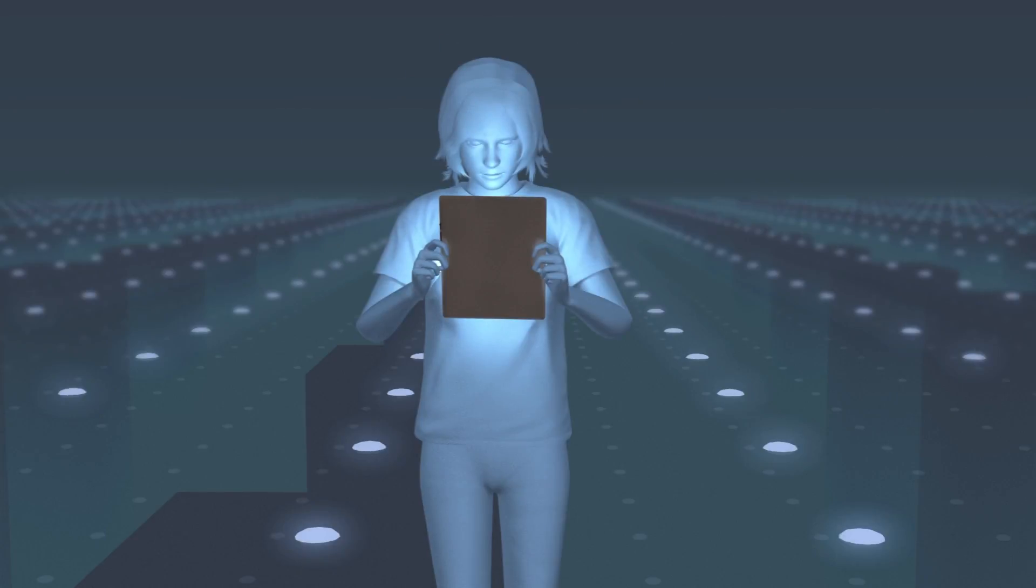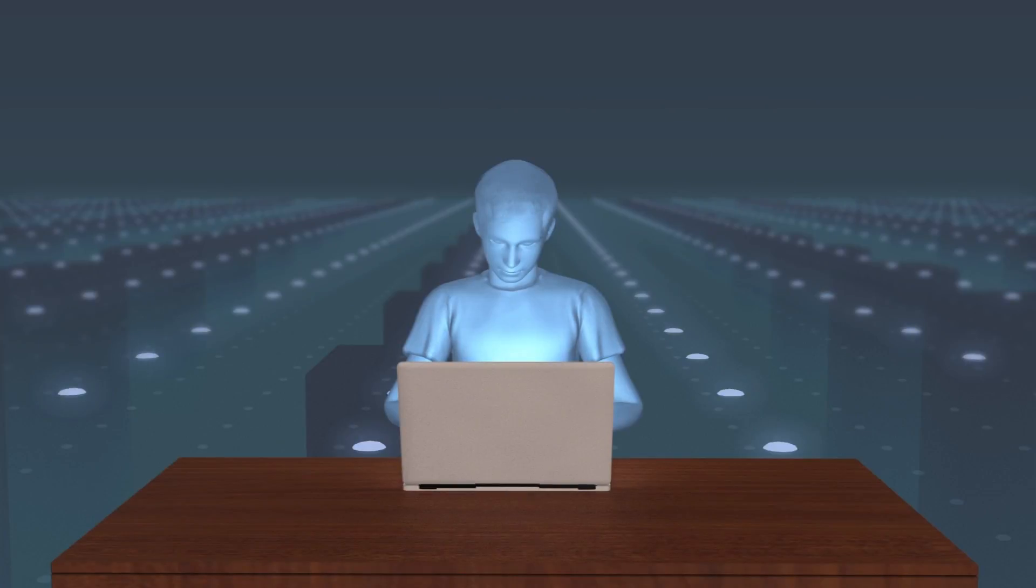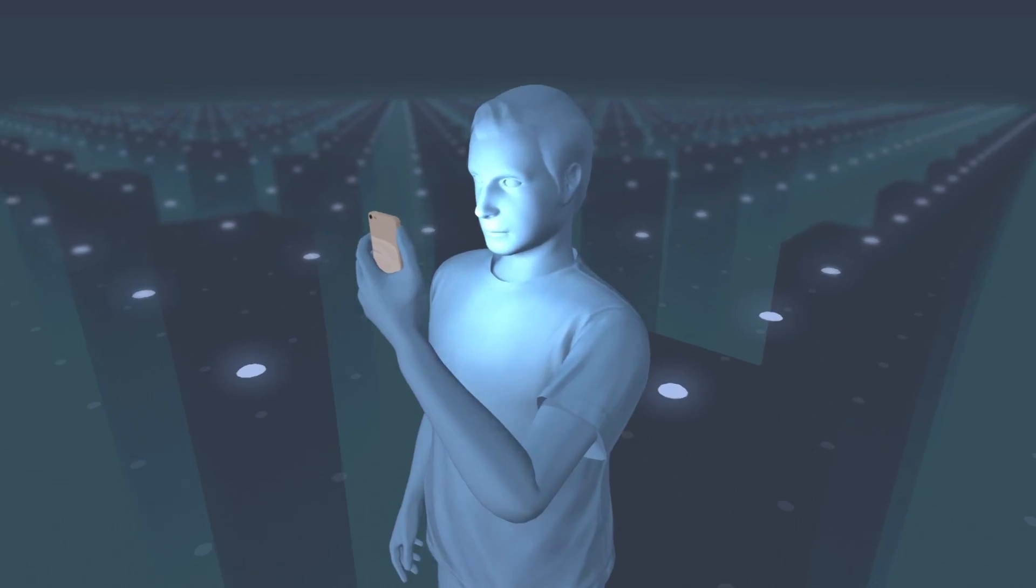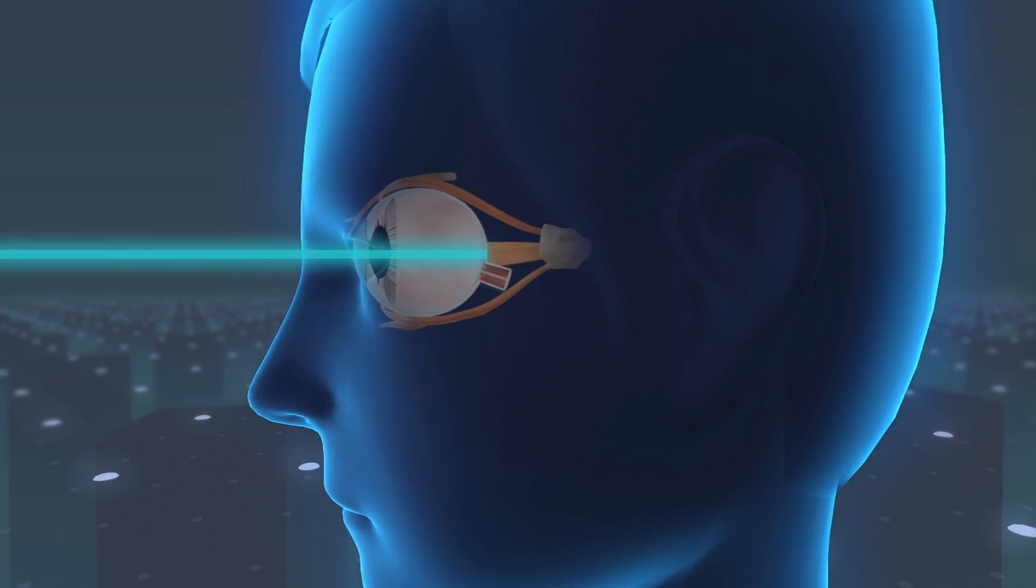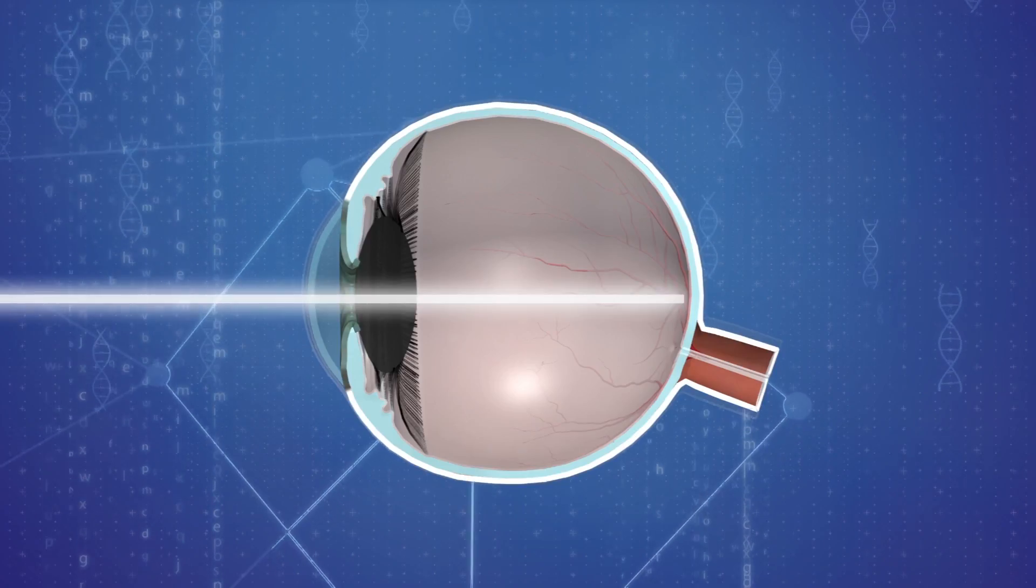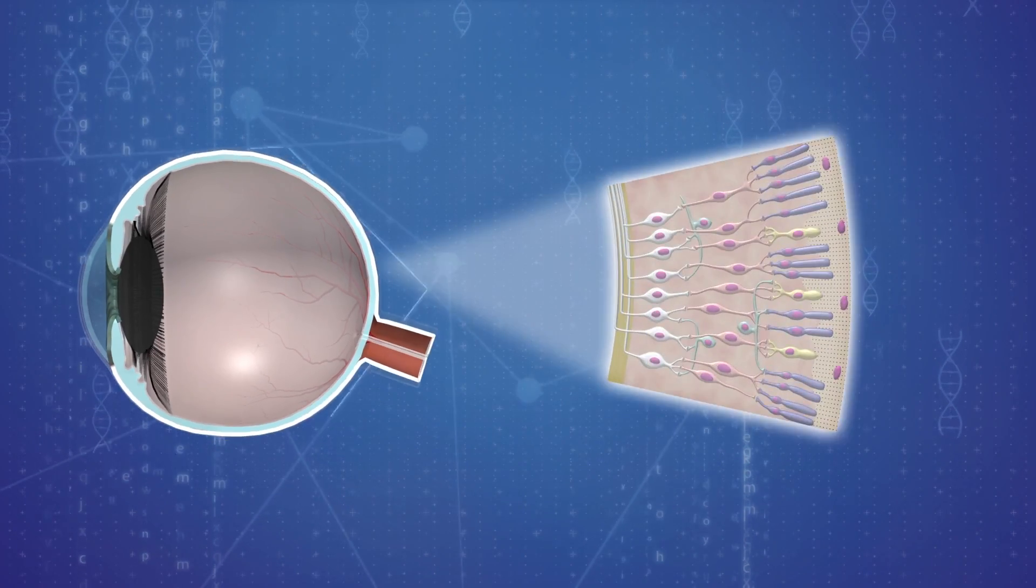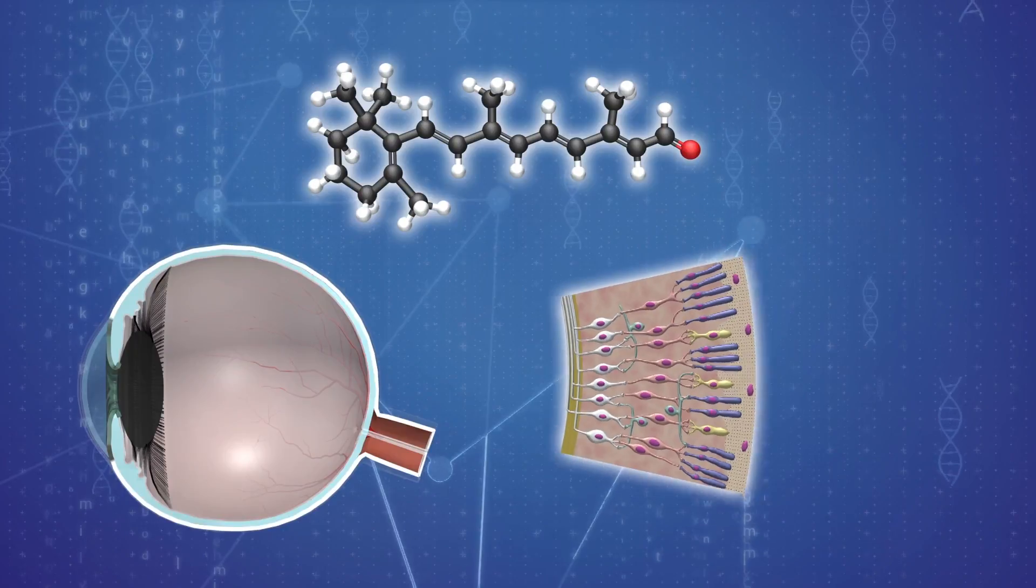Digital devices like phones or tablets are constantly exposing us to blue light, which cannot be blocked or reflected by the eye's cornea or lens. Photoreceptor cells in the retina rely on molecules called retinal to sense light and trigger vision.